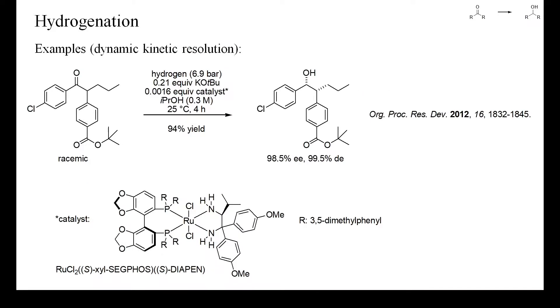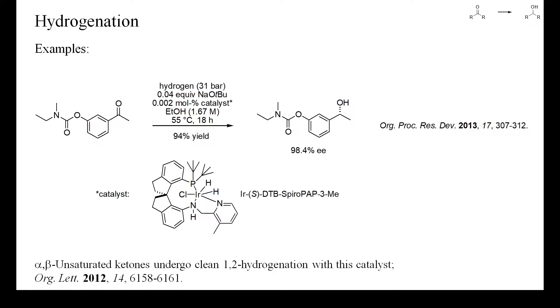This is an example of a dynamic kinetic resolution with a similar catalyst as in the previous example. This catalyst hydrogenates only one of the two enantiomers of the racemic starting ketone to yield the main product. The other enantiomer of the starting ketone is quickly epimerized by the base so that a complete conversion of the starting ketone into an enantiomerically and diastereomerically pure alcohol can be attained.